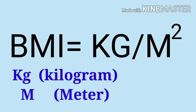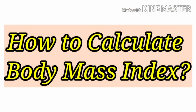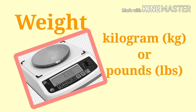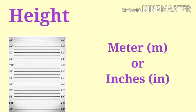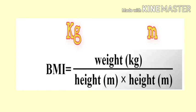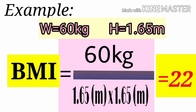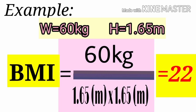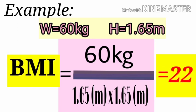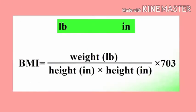How to calculate Body Mass Index: first, measure your weight in kilograms or pounds and your height in meters or inches. Using kilograms and meters, divide weight by height in meters squared. For example, if a person's weight is 60 kg and height is 1.65 m: 60 ÷ (1.65)² gives a BMI of 22.